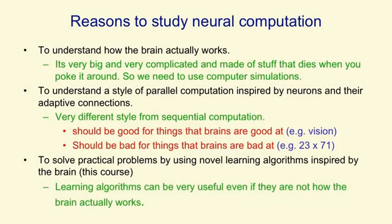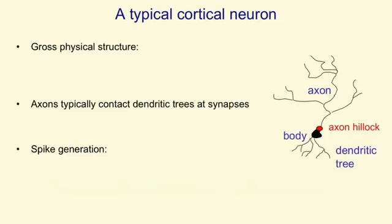So in most of this course we won't talk much about how the brain actually works. It's just used as a source of inspiration to tell us that big parallel networks of neurons can compute very complicated things. I'm going to talk more in this video, though, about how the brain actually works.